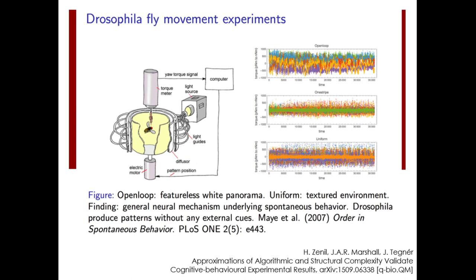This is another more recent experiment with perhaps one of the insects with the simplest behaviour: a fruit fly. This experiment is much more sophisticated, and to understand it in detail you must read the original paper, but let me briefly explain how we were able to test CTM and BDM on this dataset and experiment.